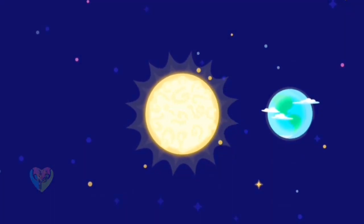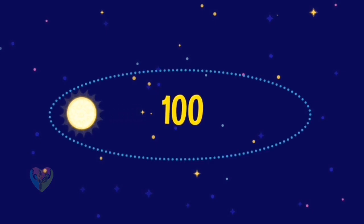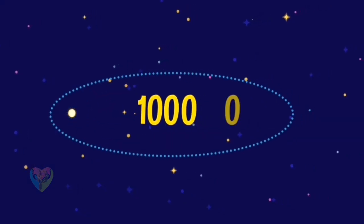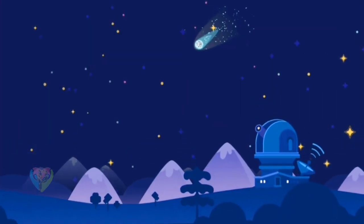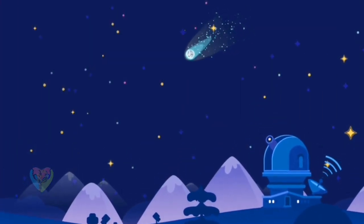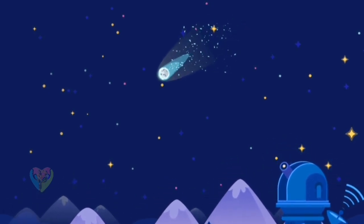Some comets, like planets, orbit the sun over a period of a few years, but most of them need hundreds, thousands, and even millions of years. For example, the brightest comet of the last century, Hale-Bopp, won't come back to us for 2,000 years.